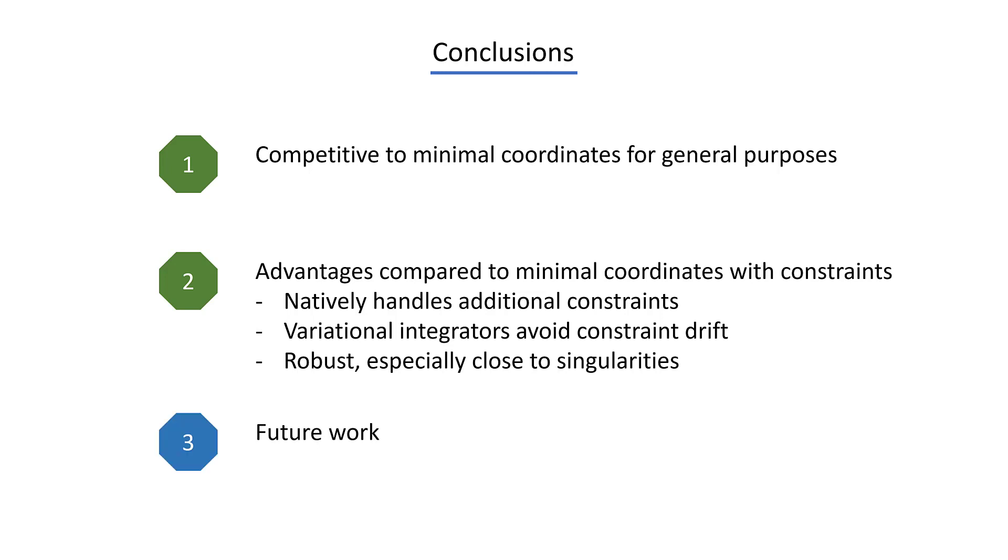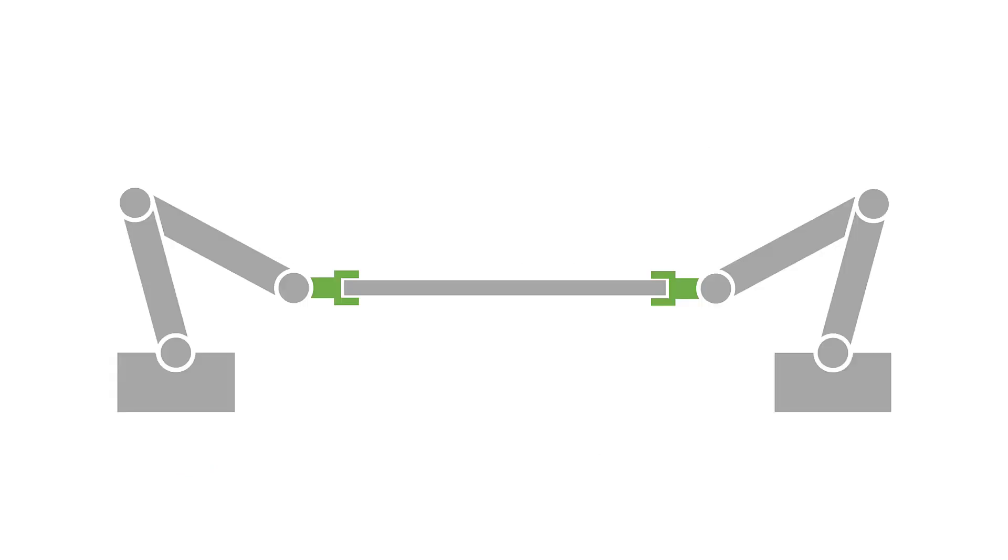For future work, the first thing we'd like to do is incorporate higher order integrators to take even larger time steps, which is really helpful for real-time control, such as model predictive control. And then we would like to be able to treat inequality constraints, for example to handle contact interactions, so that in the future, our robots from the beginning can actually have legs and walk around while performing their tasks.